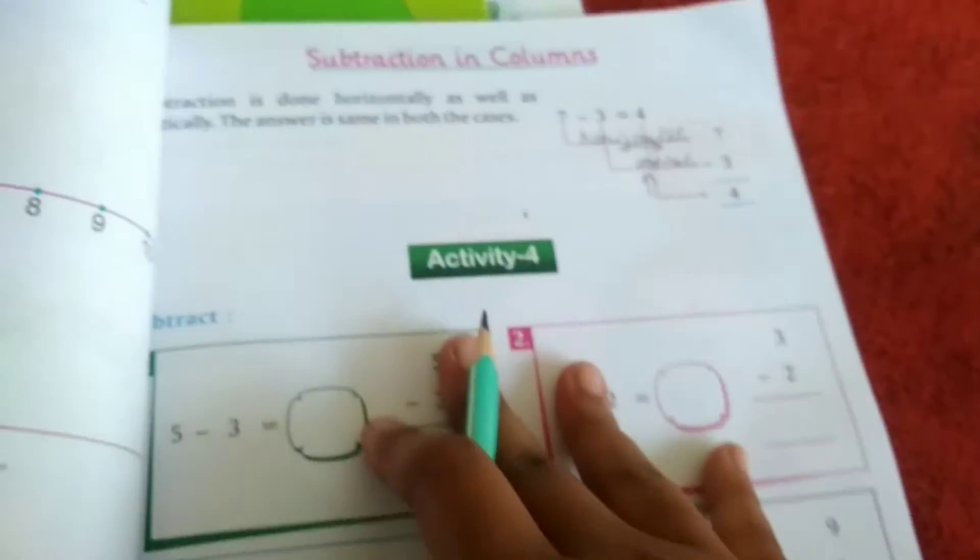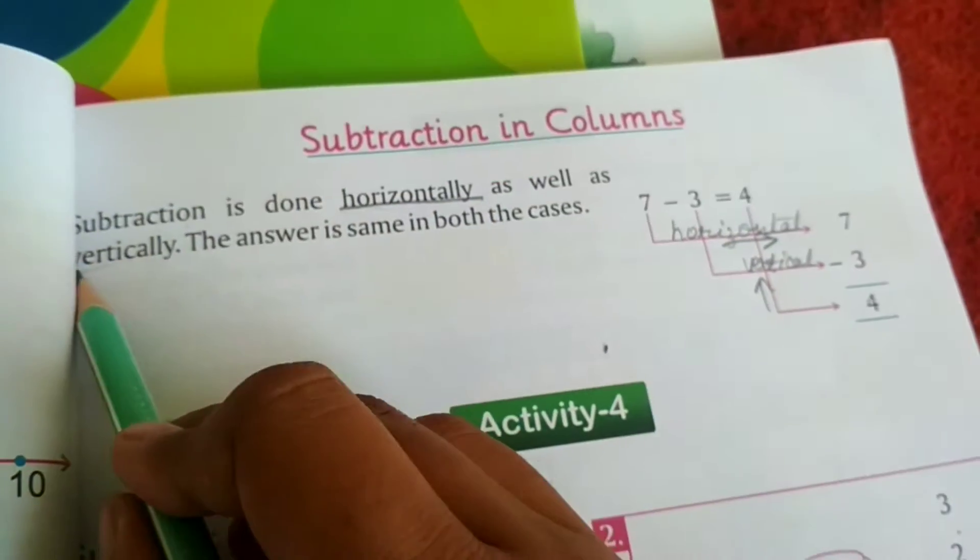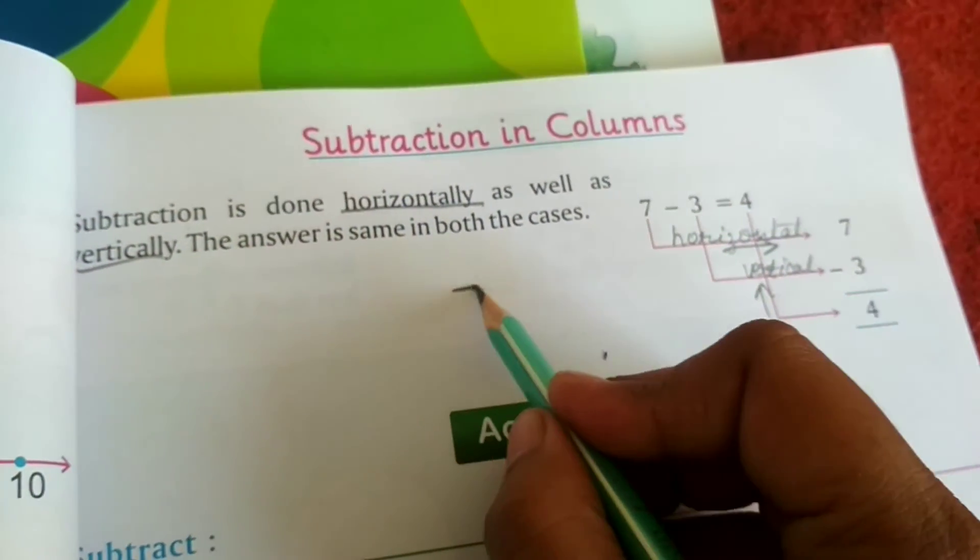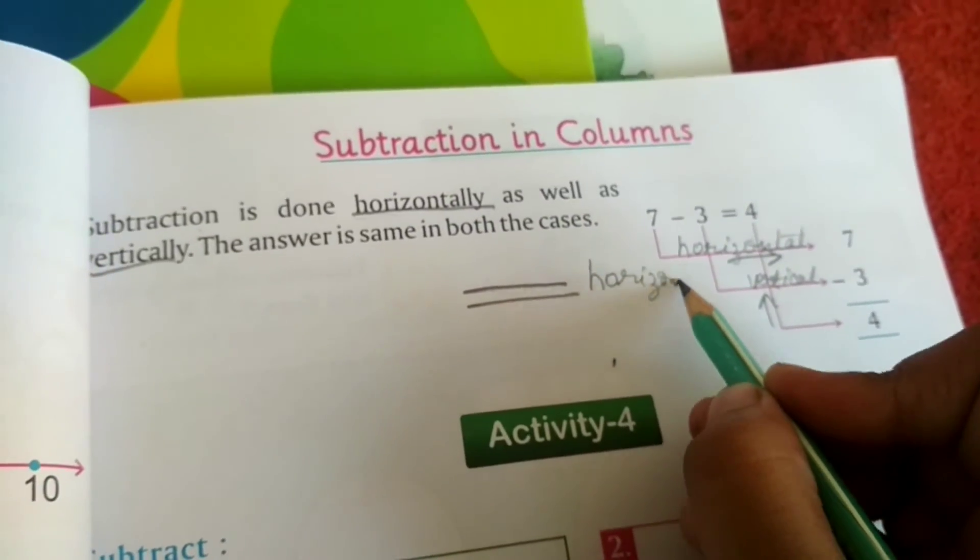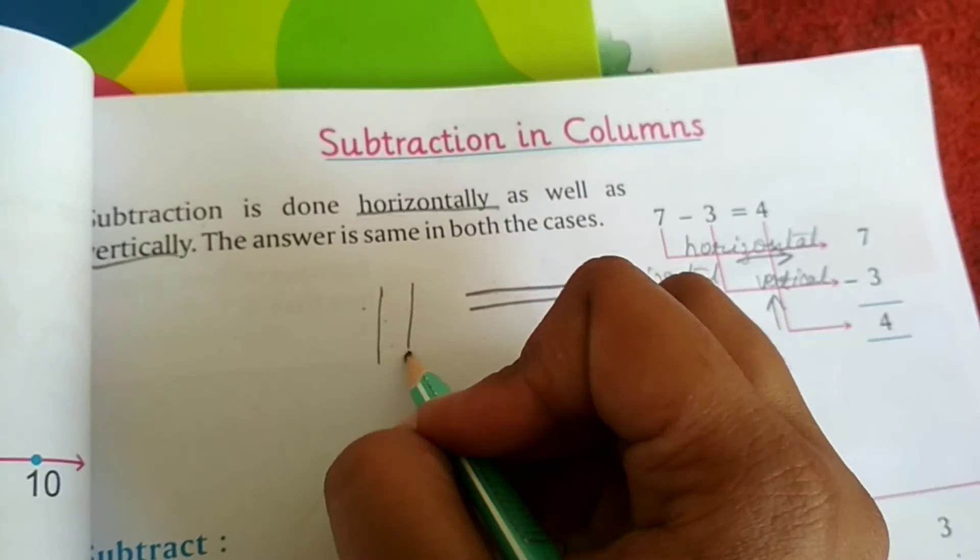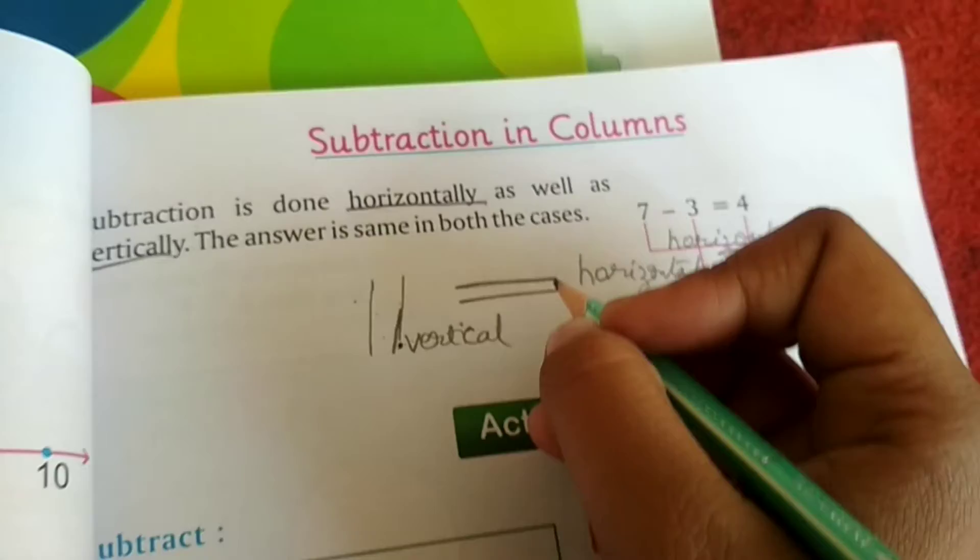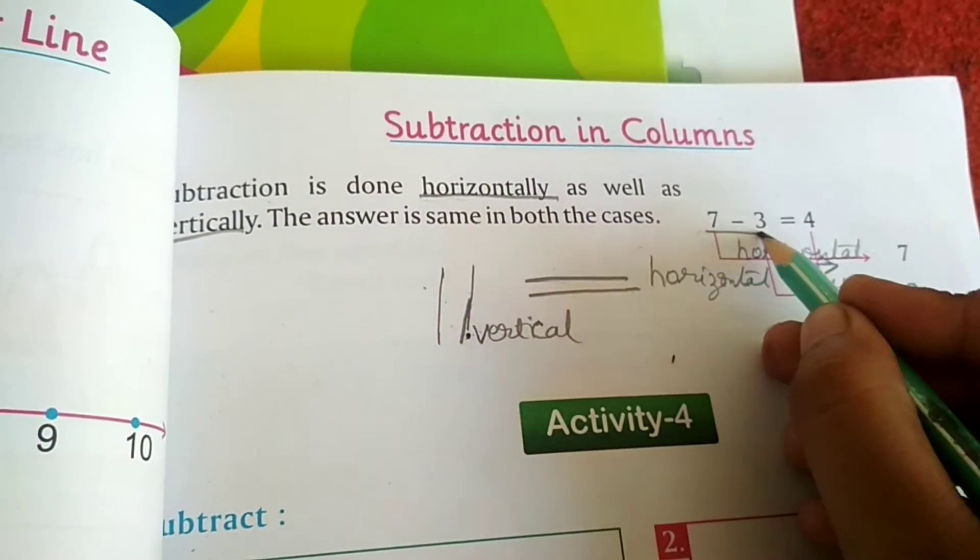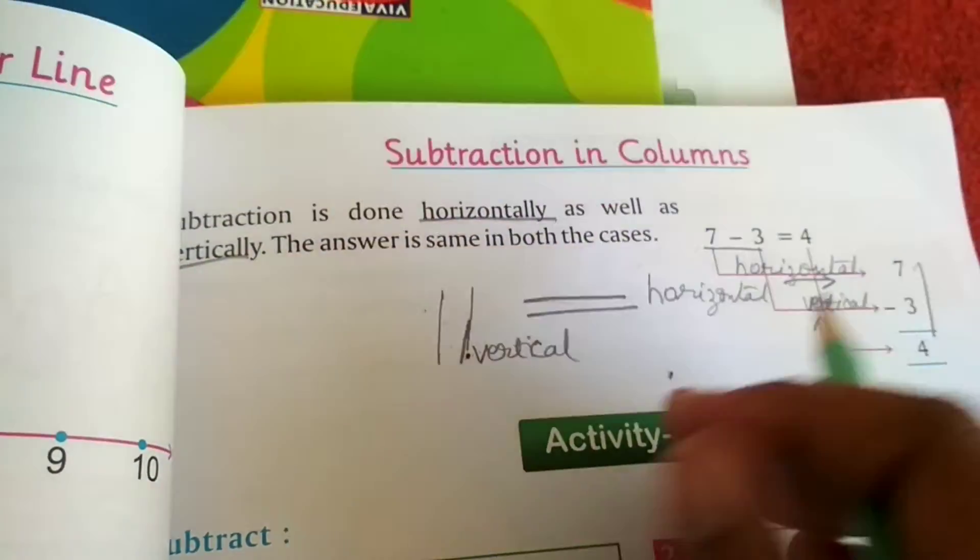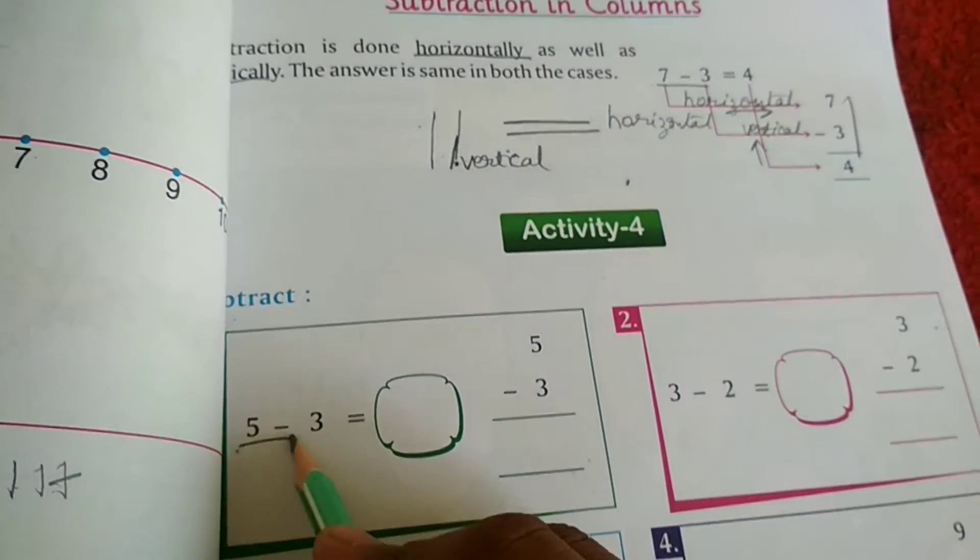Now what we will do? We will do subtraction in columns. How many columns are there? Subtraction is done in two columns, horizontal and vertical. Horizontal line, this is called horizontal. And this straight line is called vertical line. So we have to learn both horizontal as well as vertical lines. Activity number 4, this is horizontal vertical.